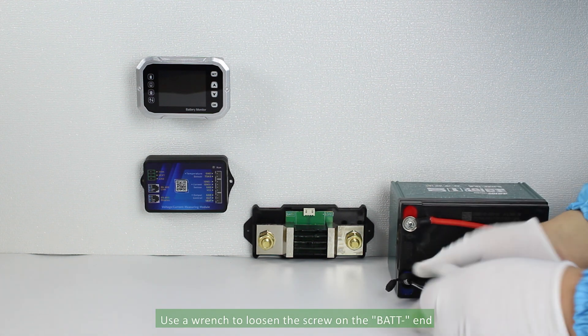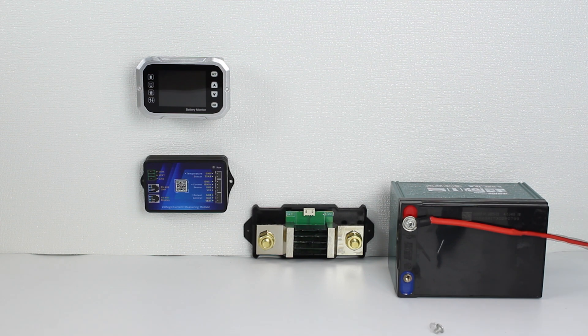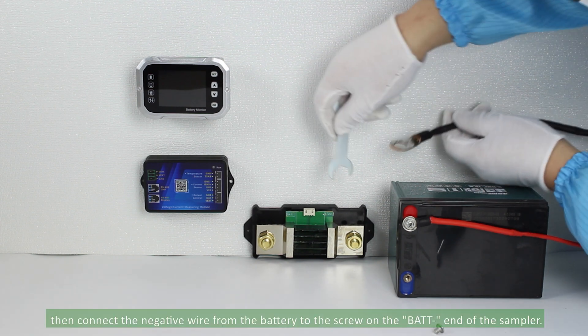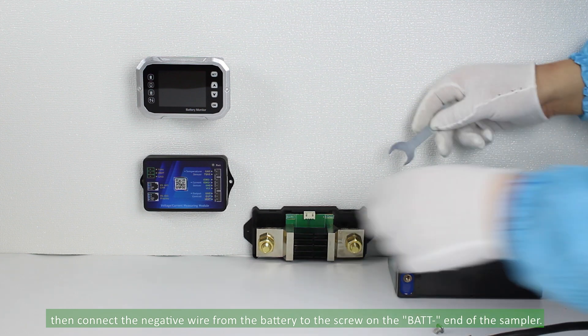Use a wrench to loosen the screw on the bat end. Then connect the negative wire from the battery to the screw on the bat end of the sampler.